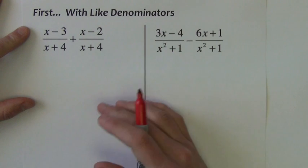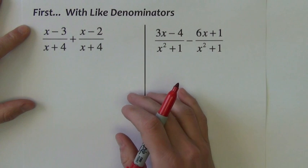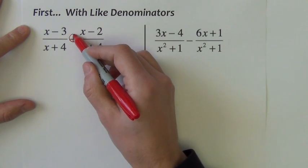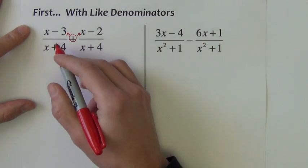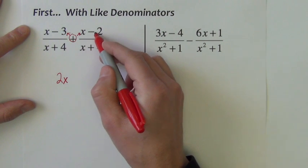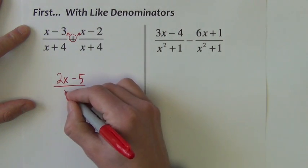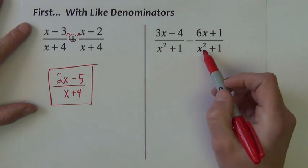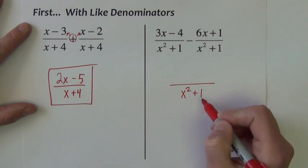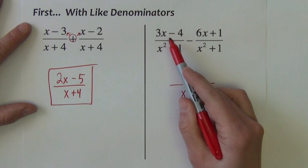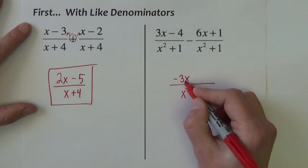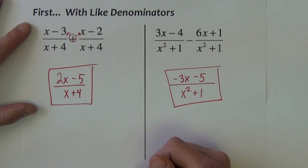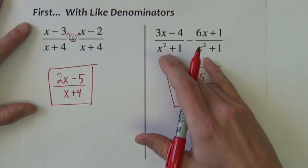Alright, first off, to not just completely overwhelm you kind of right out of the gate, I thought we'd look at some problems that already have like denominators. Well, it's easy when they already have common denominators. We can just go ahead and add the numerators together. x plus x makes 2x. Negative 3 plus negative 2 makes negative 5 over that common denominator x plus 4. Same thing here, notice they already share common denominators, so the answer is already going to be over x squared plus 1. We just have to simplify the numerator. 3x minus 6x is negative 3x. Negative 4 minus 1 is negative 5. That's done. Piece of cake if the denominators are already common.